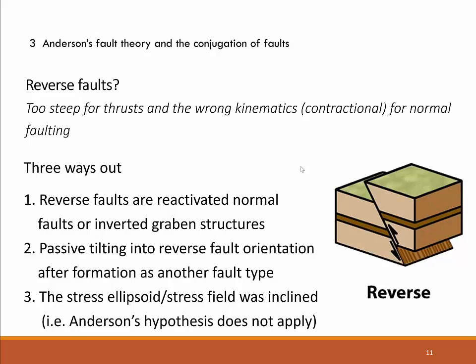What about reverse faults? They cannot be thrusts because they are too steep, but they have the wrong kinematics for normal faults. Reverse faults have the kinematics of a thrust but the orientation of a normal fault. This does not agree with Anderson's fault theory — we would have to assume that the sigma 1 vector is actually plunging at an angle of around 30 degrees, making sigma 3 non-vertical.